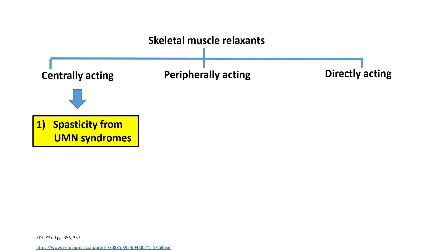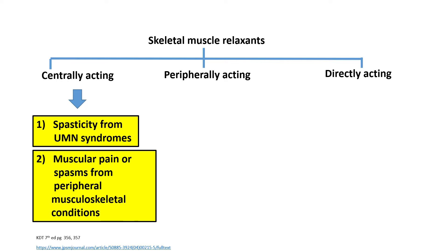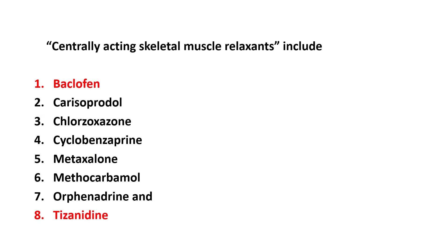Centrally acting skeletal muscle relaxants are used in the management of spasticity from upper motor neuron syndromes and also in the management of muscular pain or spasms from peripheral musculoskeletal conditions. Examples of such centrally acting skeletal muscle relaxants include baclofen, tizanidine, chlorzoxazone, and many more.